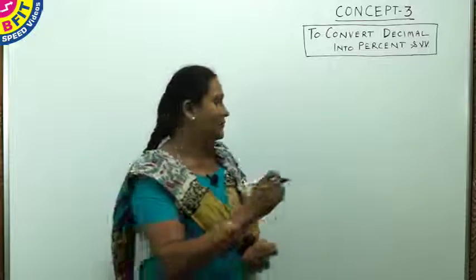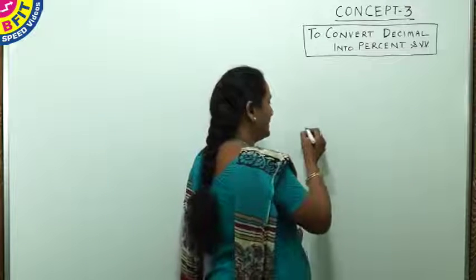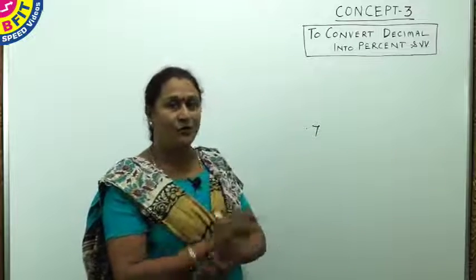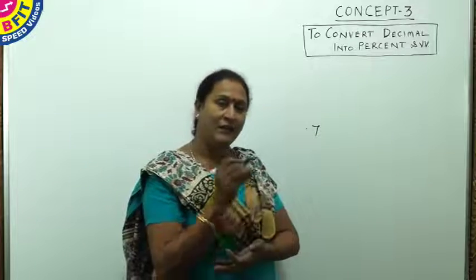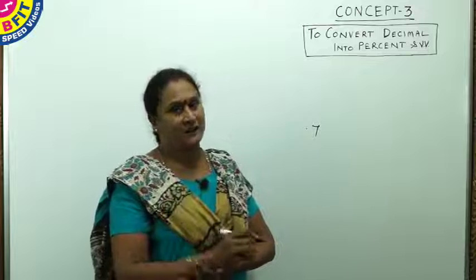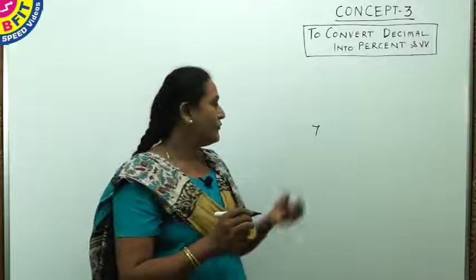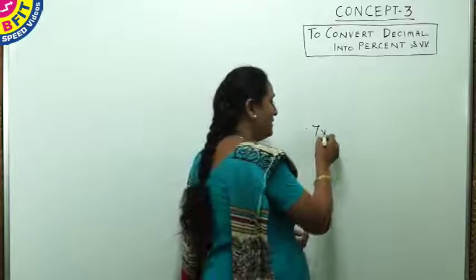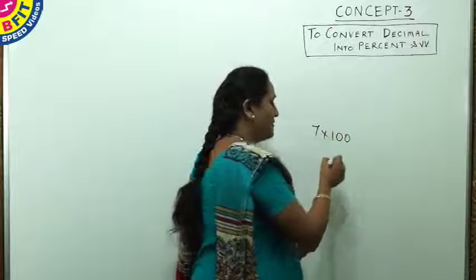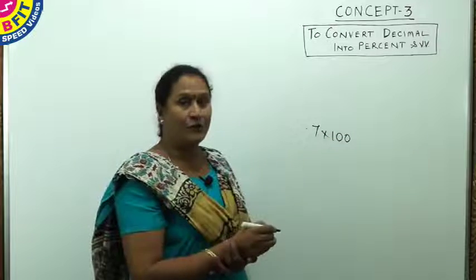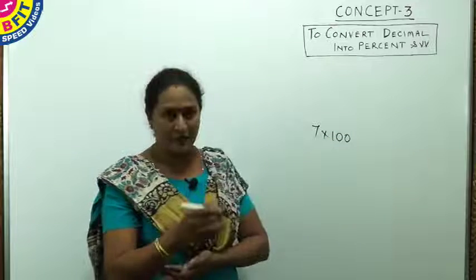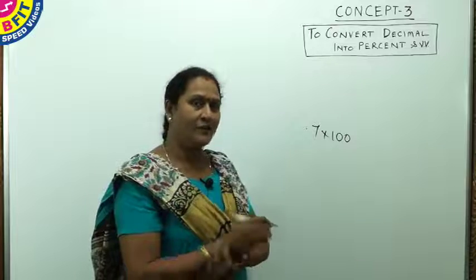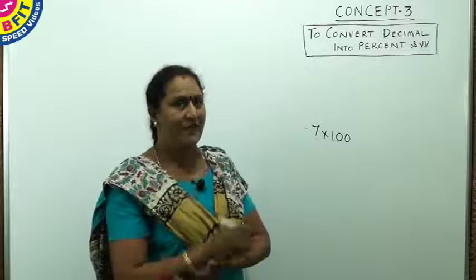Say, suppose you have decimal 0.7. To convert to percent, any integer or a fraction, multiply it with 100. So for decimal also, to find the percent, multiply it with 100. We saw earlier an example of square root of 49 percent, so the value was 0.7, and the equivalent was 70 percent.